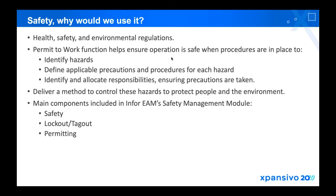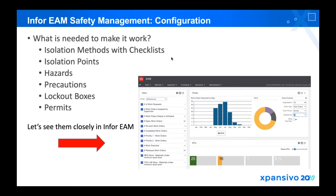So in that sense, what is it that we need to configure? This is basic information. We can define our lockout boxes, we can identify our hazards, we can identify the precautions, we need to set up the isolation points, and also the isolation methods with checklists. We're going to be looking at these one by one, looking at every aspect that we need to configure so we can generate permits out of it.